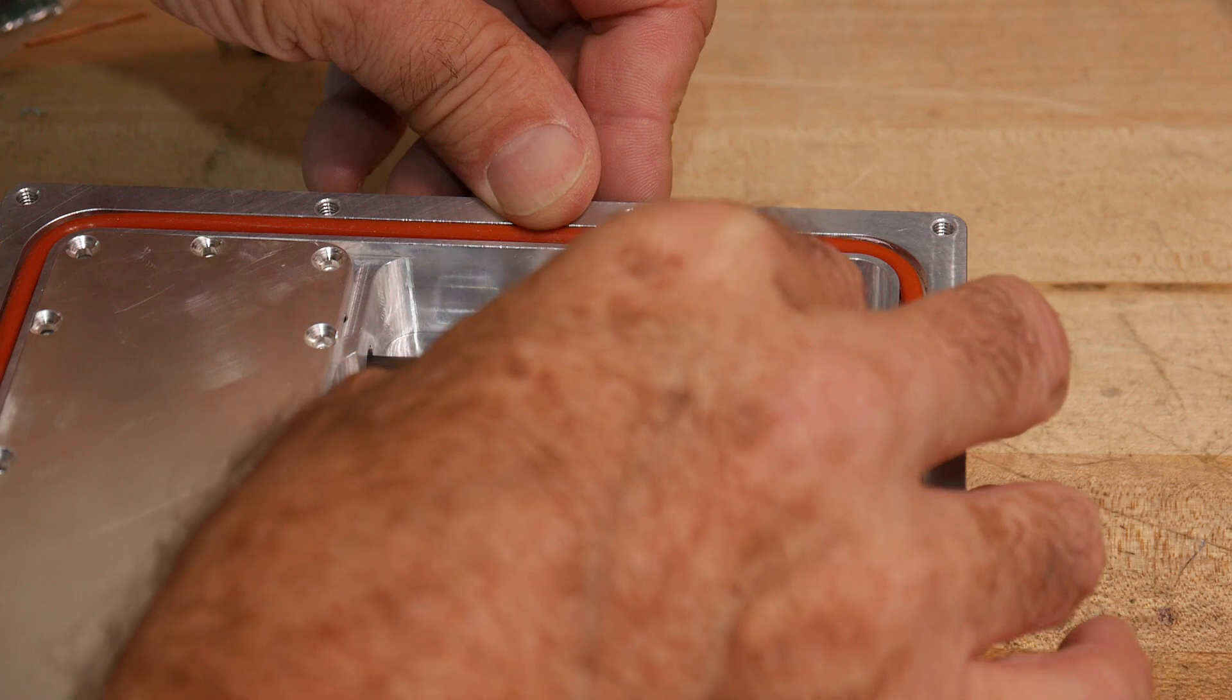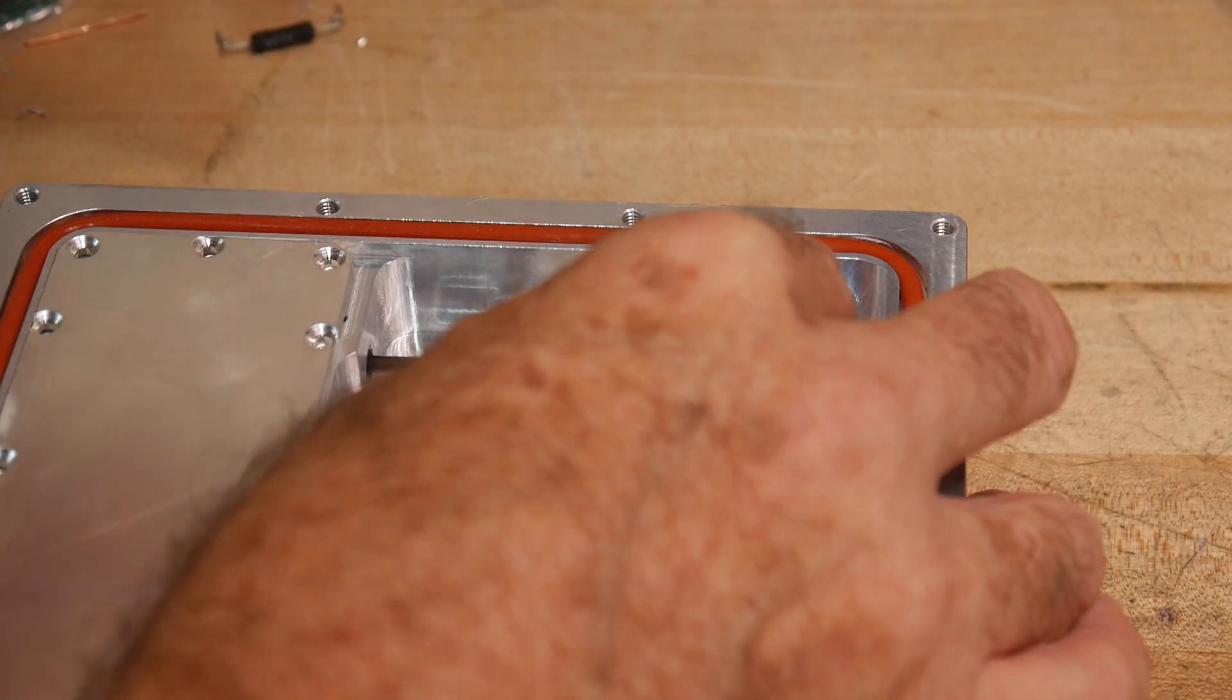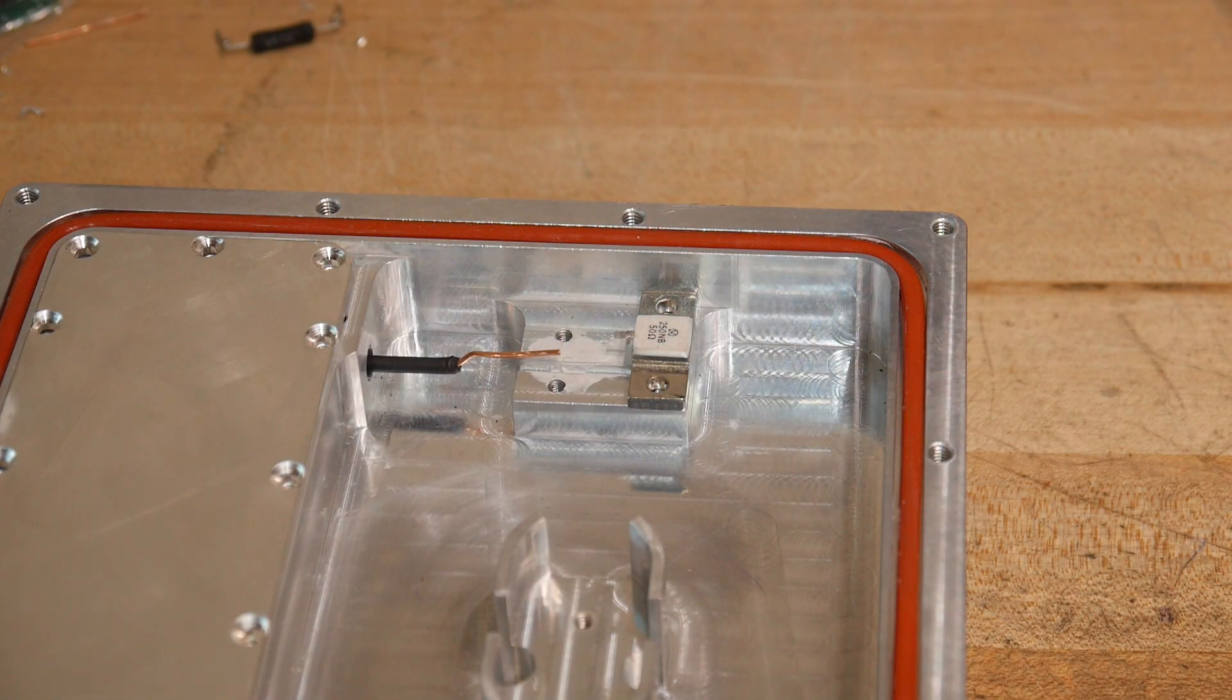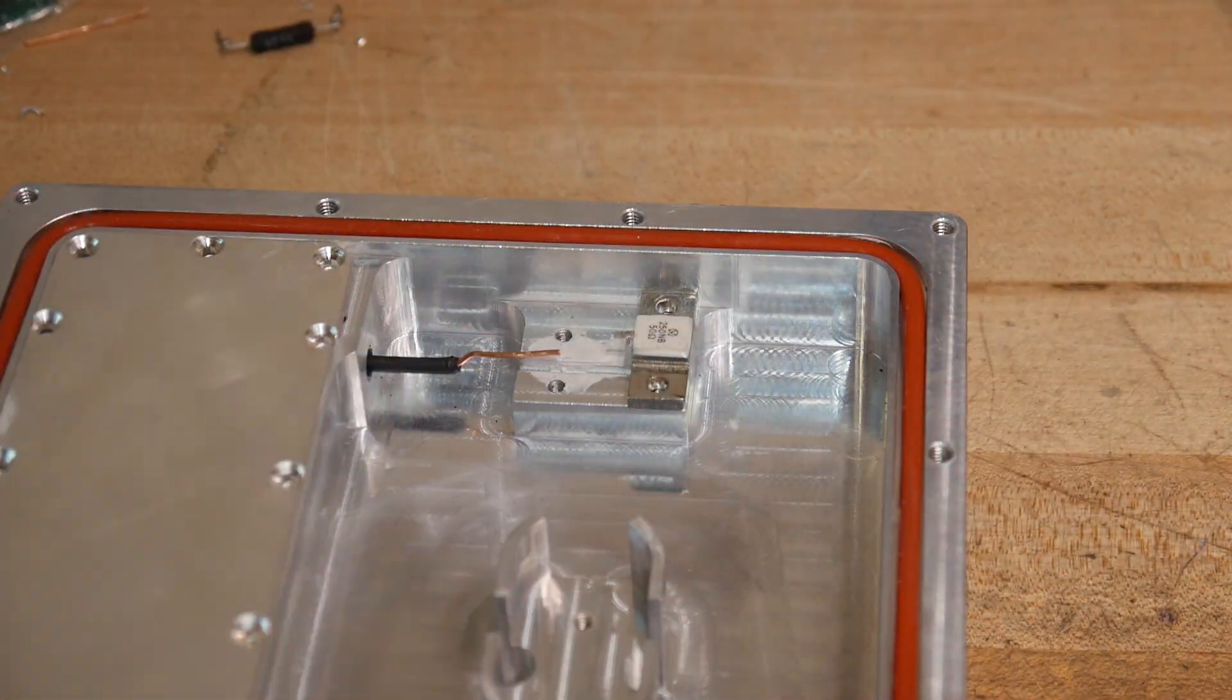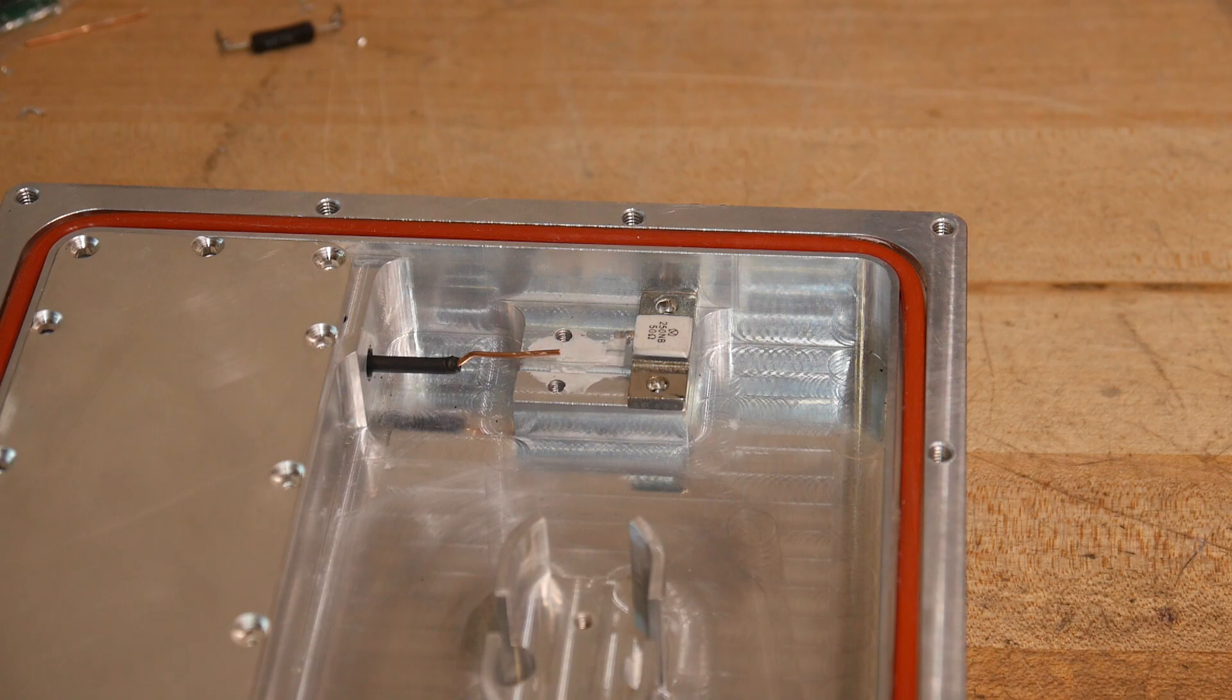What I'll do is I'll find a good location for the resistor and drill and tap that down first, and then that will give me an idea of where to put the circuit board.